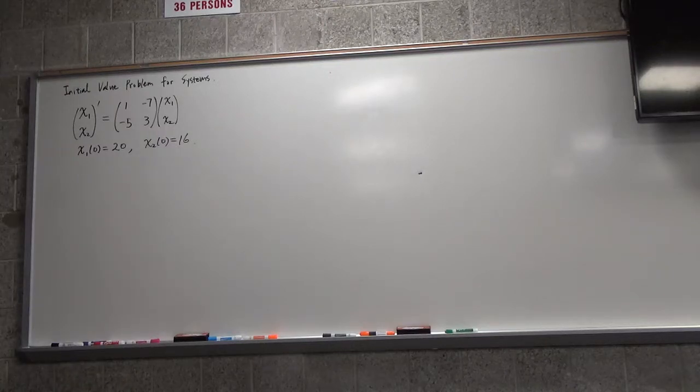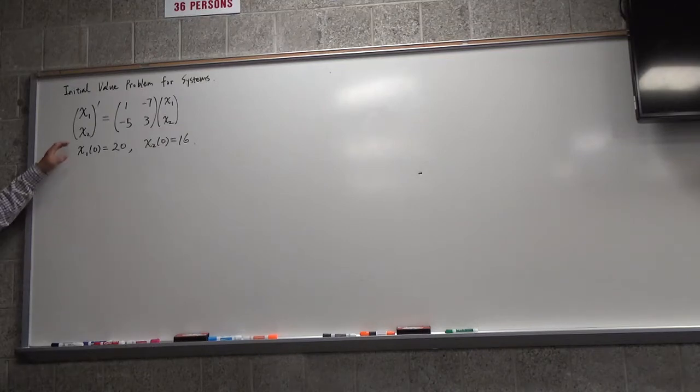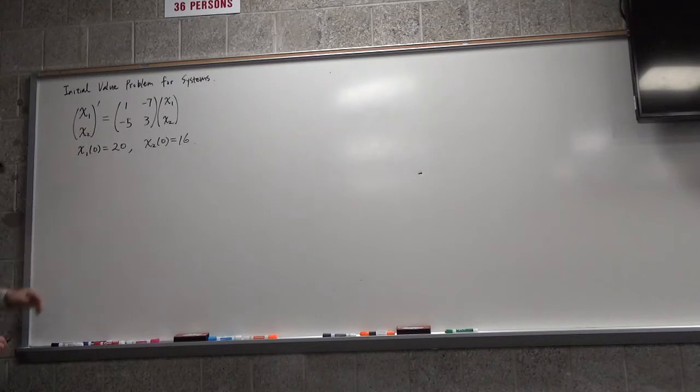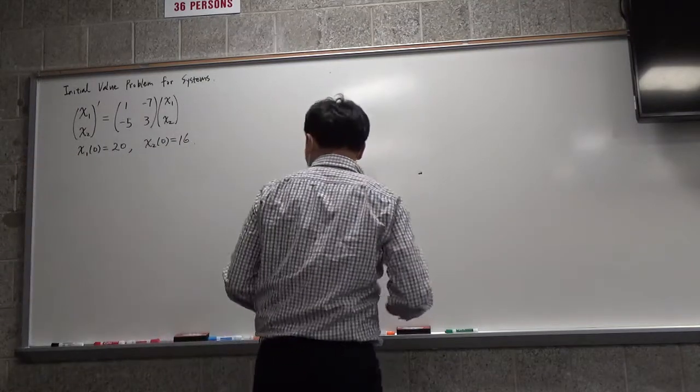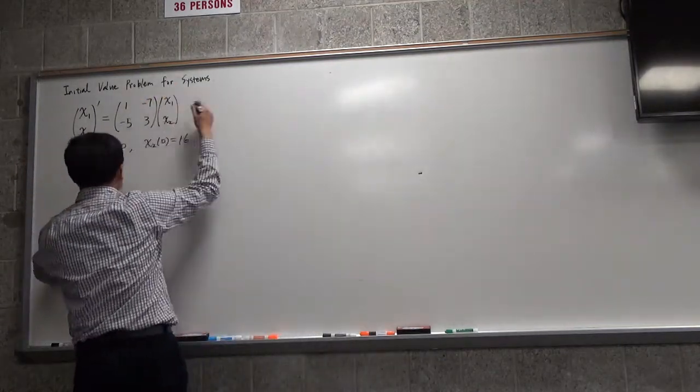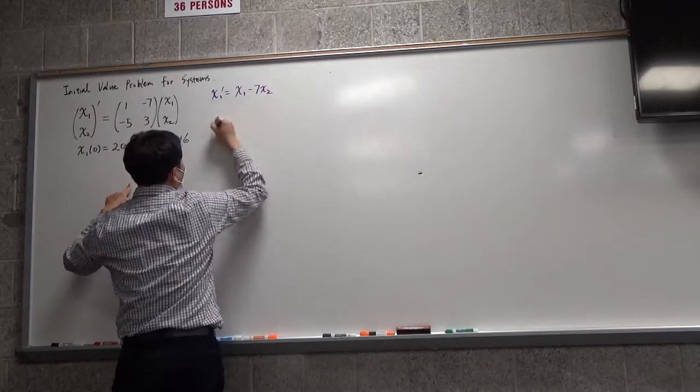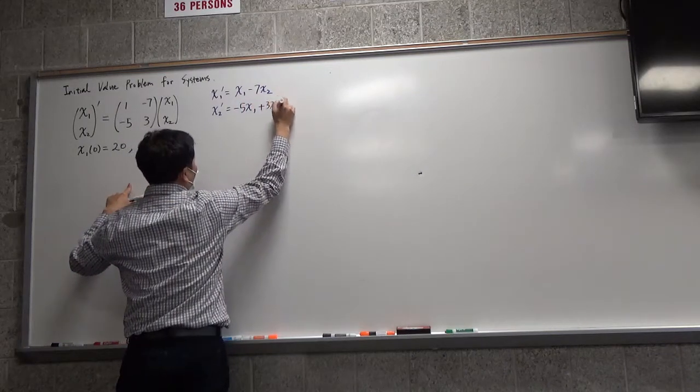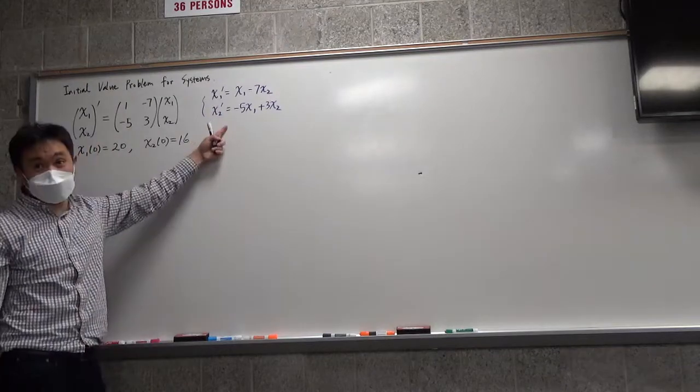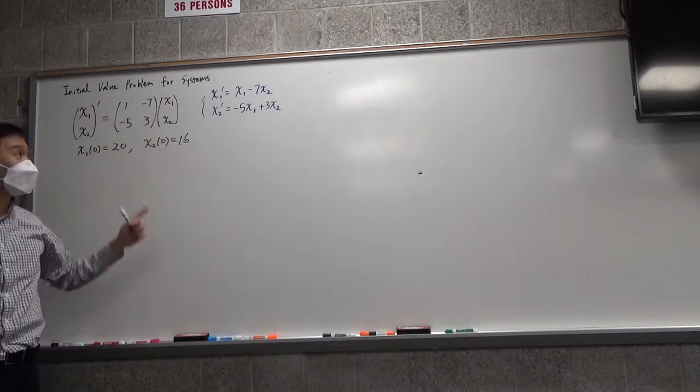Okay, so this example is an initial value problem for systems because I have given you the initial value. I wrote this differential equation in matrix form, but whichever form I write, you should be able to convert one to the other. If you do across down, you see this is really saying x1 prime is x1 minus 7x2, and x2 prime is negative 5x1 plus 3x2. I could have written this as the question, or I could have written this as the question, and sometimes you would be asked to convert between the two.